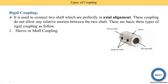Here you see the diagram of a sleeve or muff coupling. One sleeve is used to connect the two shafts — that's why it's named the sleeve coupling. It is one cylindrical component, and the shaft is fitted into this sleeve using a key.